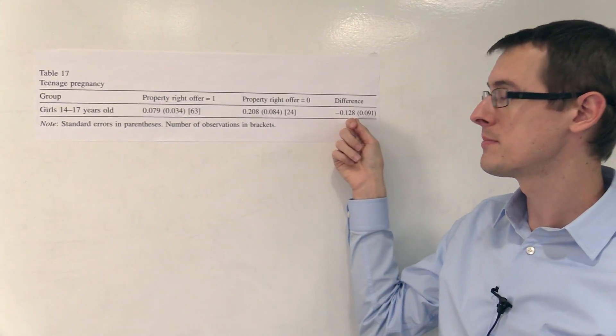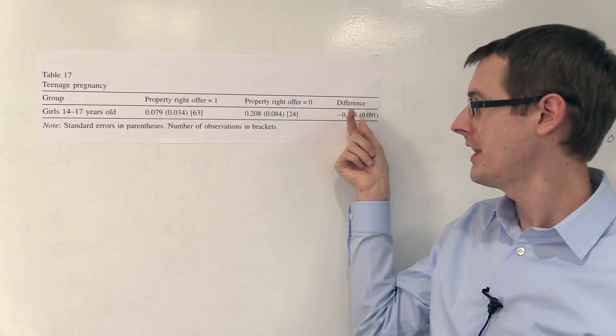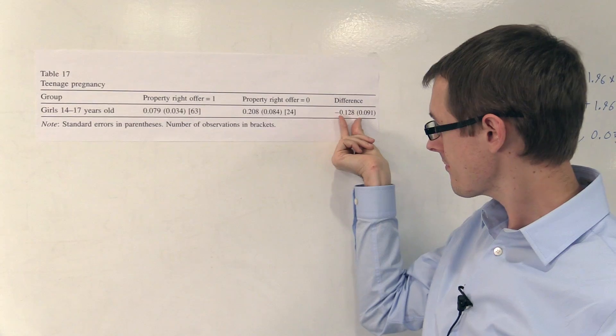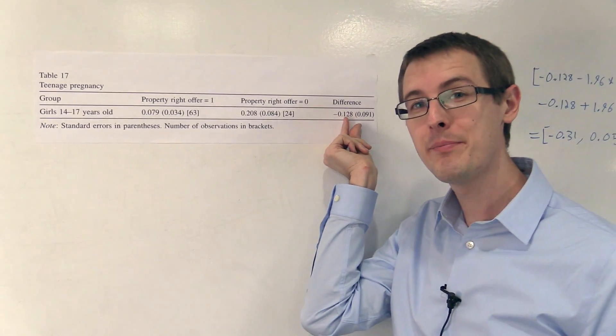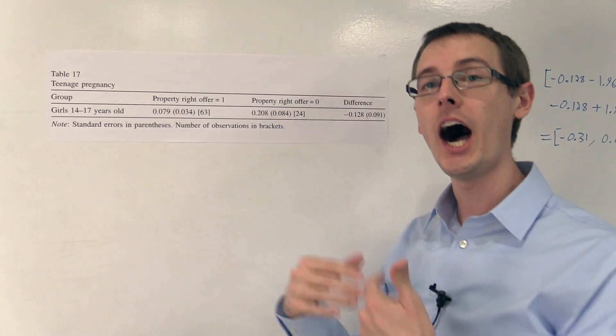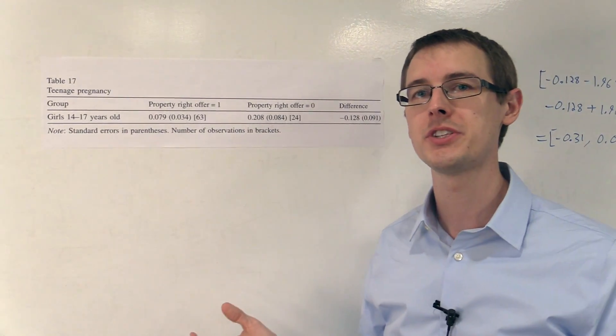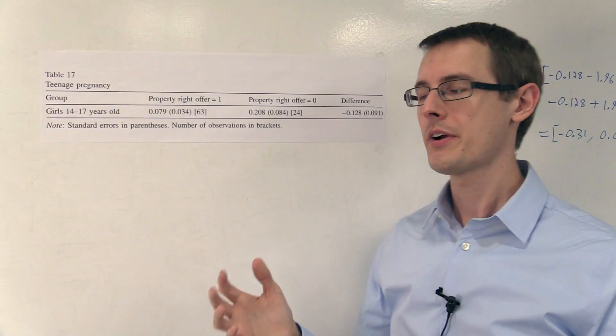The difference was minus 12.8%. This is the average treatment effect. So that's a pretty big effect. It's saying that having the option of getting property rights decreases teenage pregnancy by about 13%. It's a huge number.